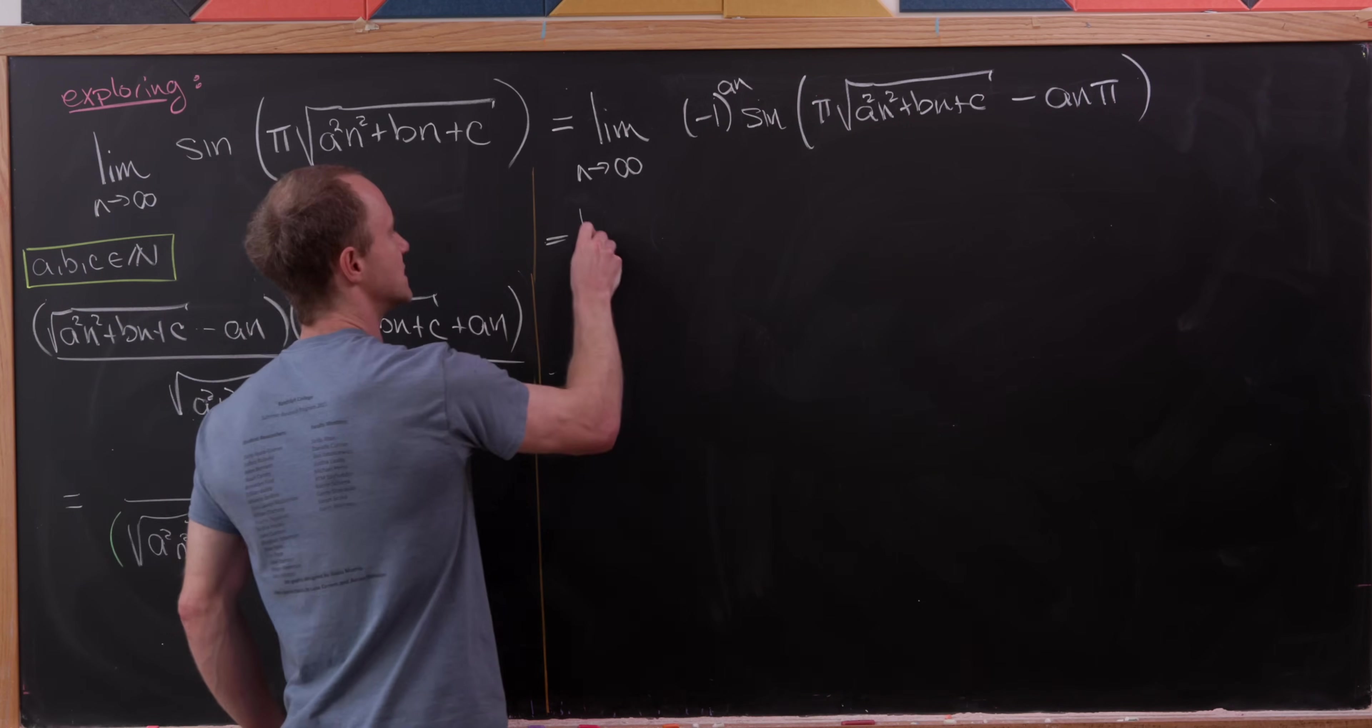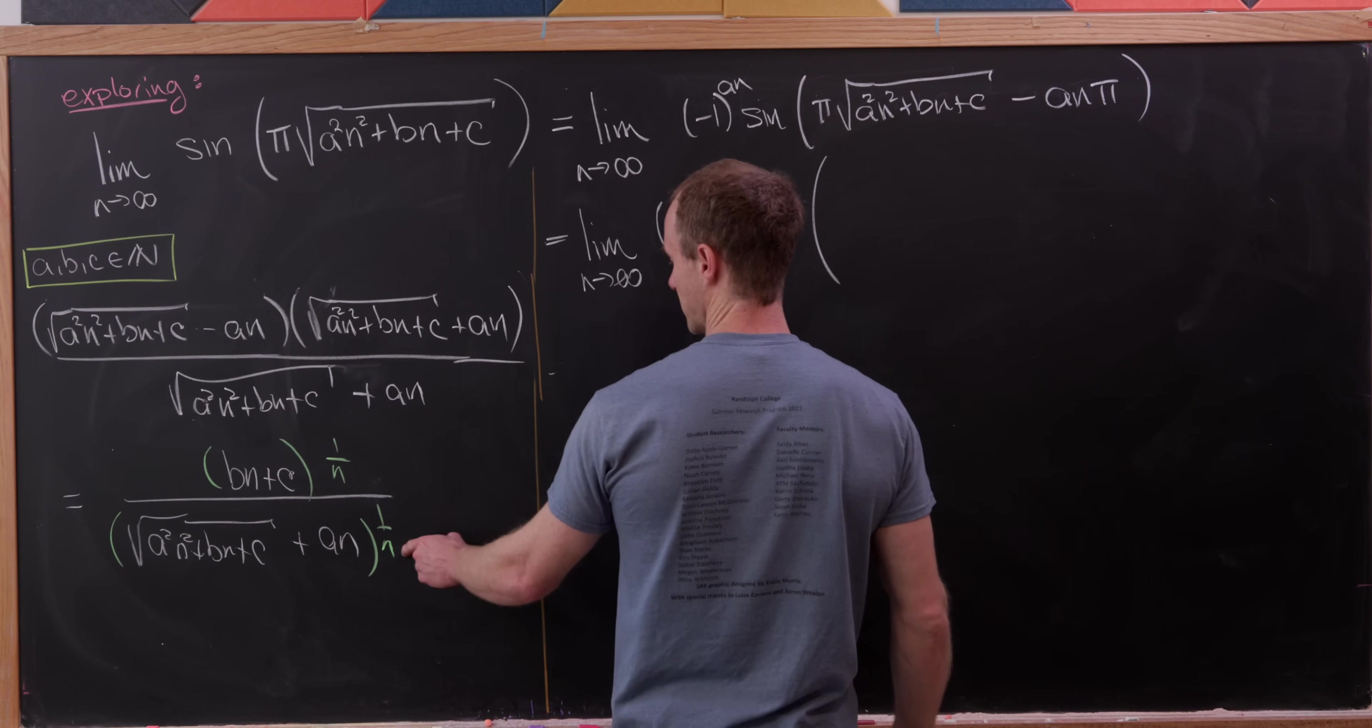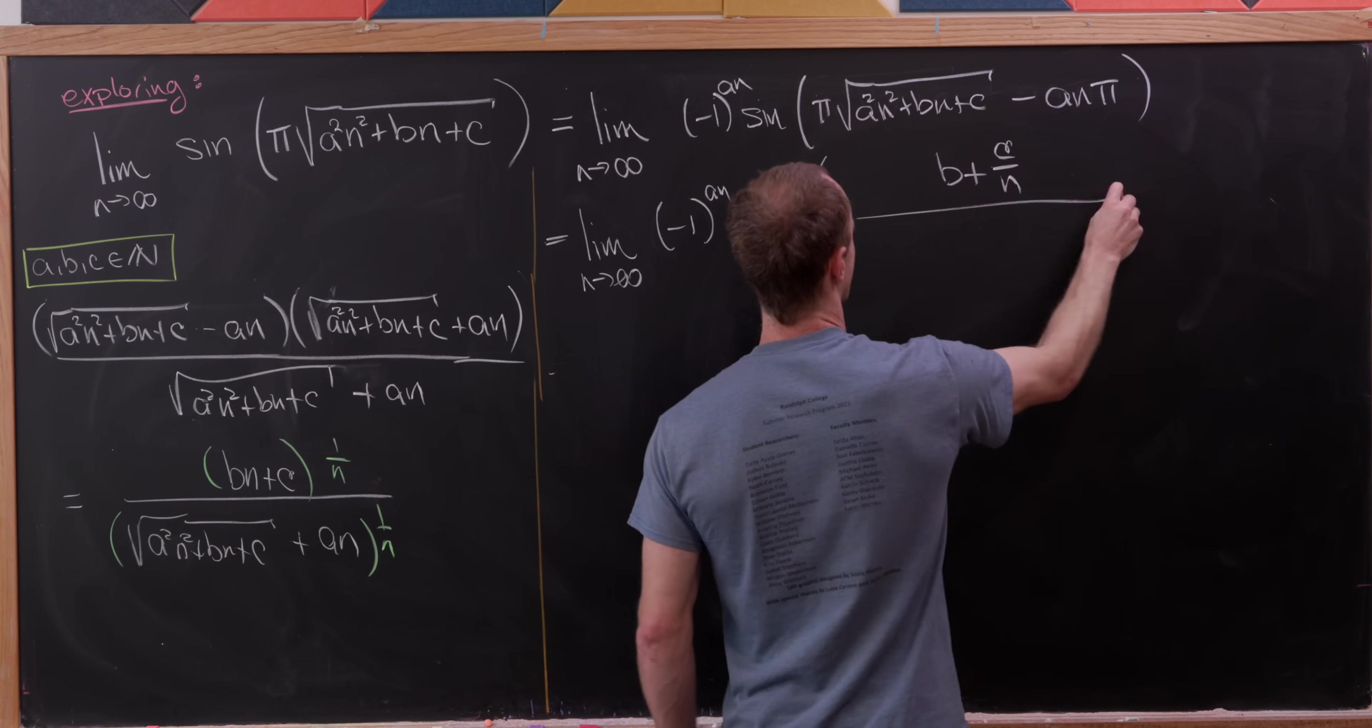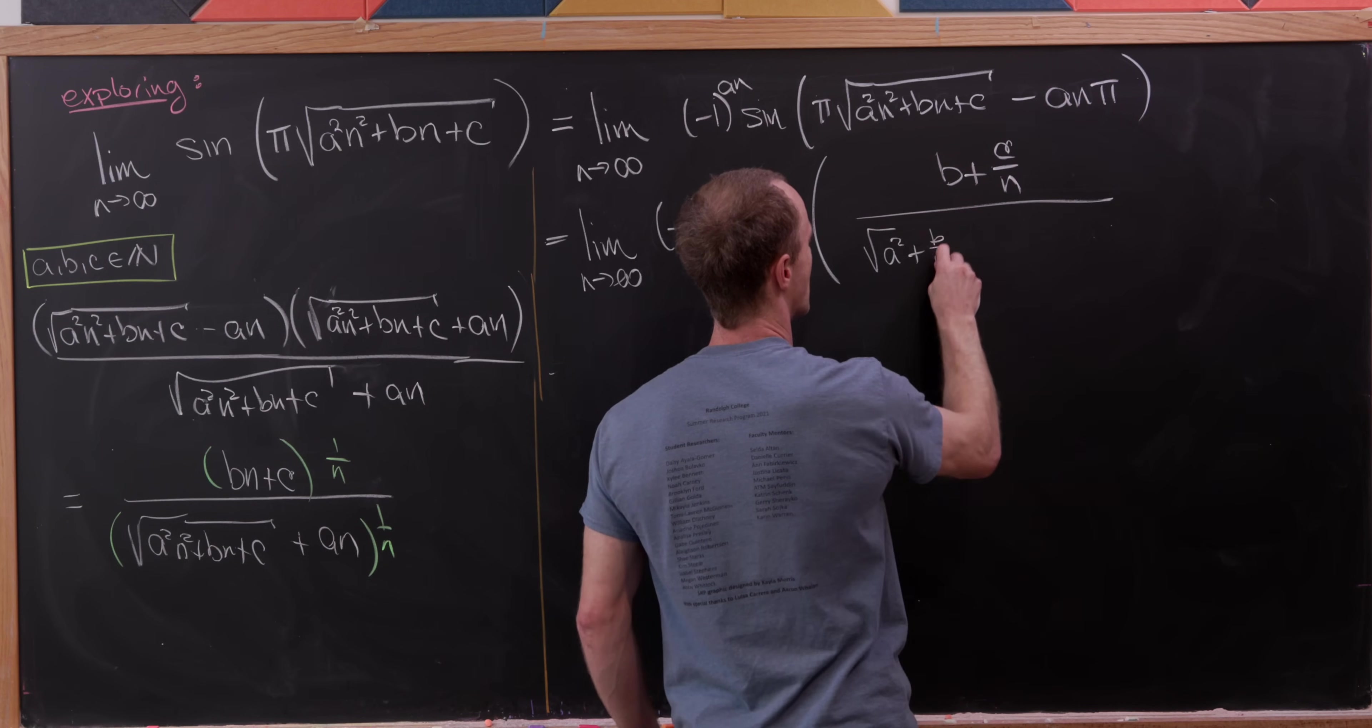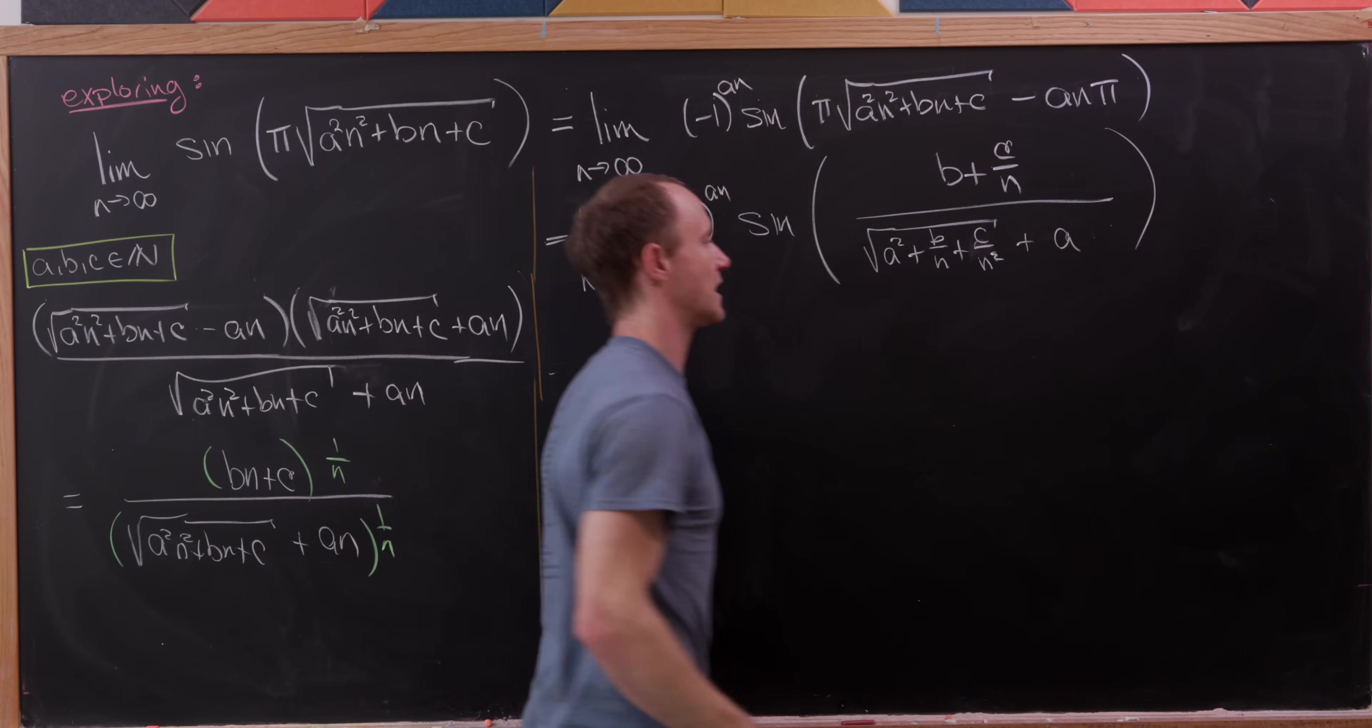So we have our limit as n goes to infinity of (-1)^(an) times sine of—let's see, we've got this one over n multiplying through. That's going to leave us with b plus c over n in the numerator. And in the denominator, we're going to have the square root of a² plus b over n plus c over n², and then plus a.